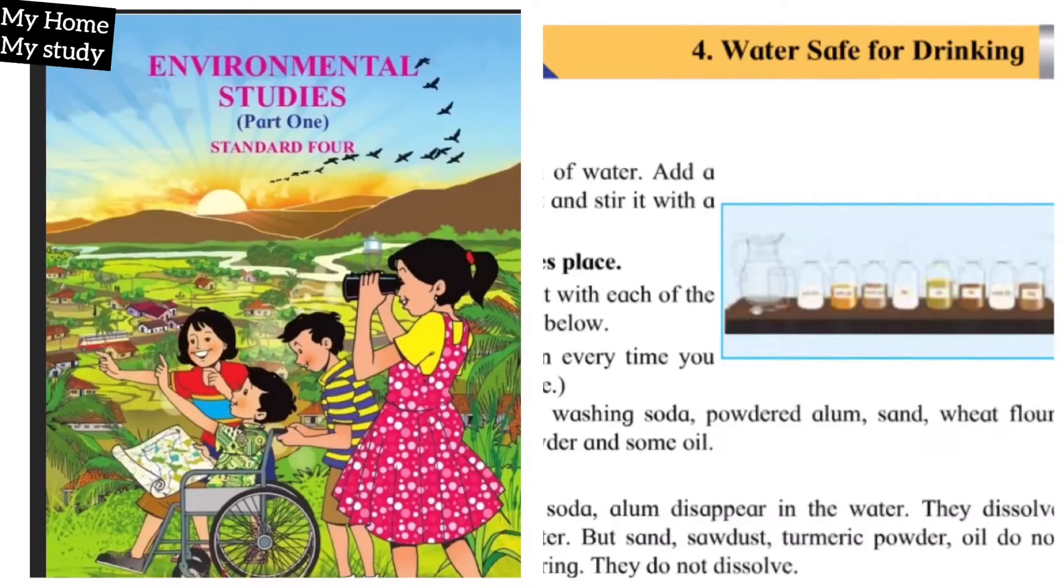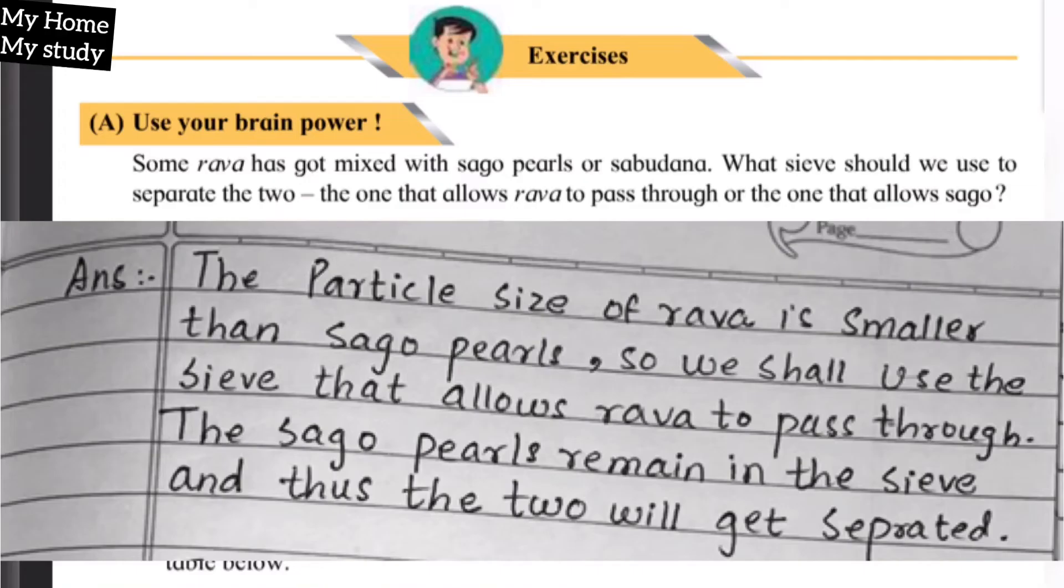Hello students, welcome to the channel. Today I will give the answer of Chapter number 4: Water Safe for Drinking from Environmental Studies Part 1, Fourth Standard. Chapter number 1, 2, 3 notes are already given. You can find them from My Home My Study playlist. Before starting the video, I request all of you to subscribe my channel and share with a needy person.